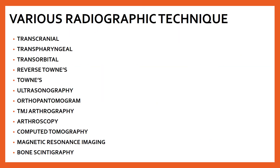The various radiographic techniques for the temporomandibular joint include: transcranial, transpharyngeal, transorbital, reverse Towne's, Towne's, ultrasonography, OPG, TMJ arthrography, arthroscopy, CT scan, MRI, and bone scintigraphy. This is a commonly asked short answer question where you need to enumerate the techniques available for TMJ imaging.